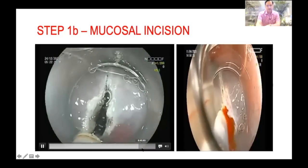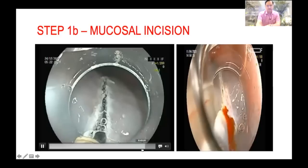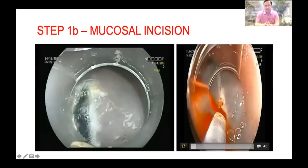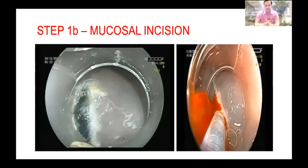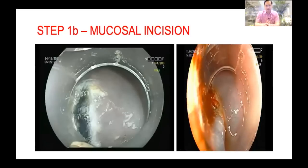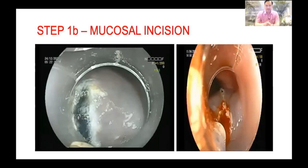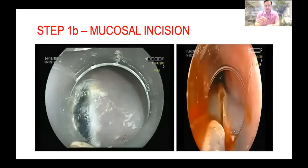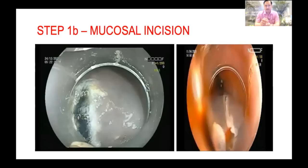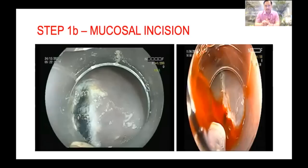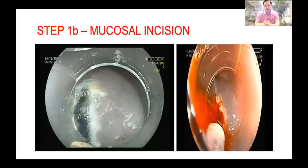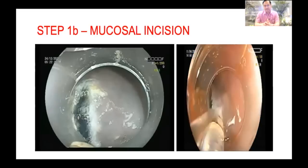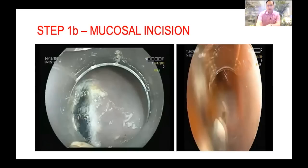Now you can see the absolutely clean mucosal incision. Sometimes you can face significant bleeding from the mucosal margin. Then first irrigate with saline with indigo carmine to exactly identify the site of the bleeder. Here I am irrigating, and now I identified the site and applied a few strokes of coagulation current — the bleed immediately ceases. After coagulation, there is no active bleed.